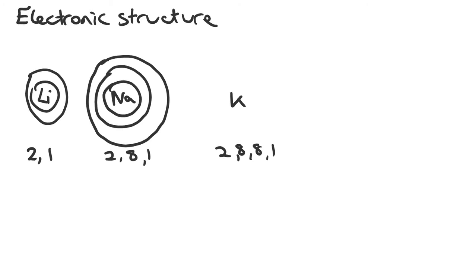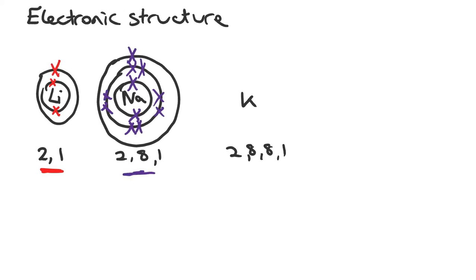So if we start with lithium, we know that it has got 3 electrons, its atomic number is 3, 3 protons and so 3 electrons. If I was to build up the electronic structure I would say that the first 2 electrons go into the first shell and the last electron goes into its outer shell, so its electron configuration is 2, 1. If I then go down the group I might look at sodium, which has 2 electrons on an inner shell followed by 8 electrons in a second shell and then 1 on its outer shell, with the electron configuration 2, 8, 1.